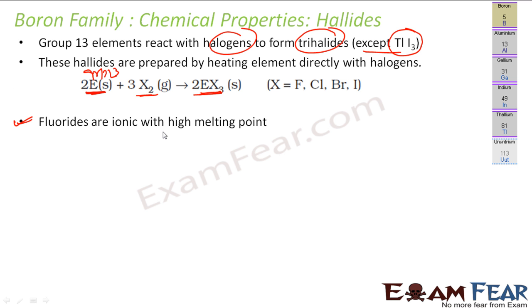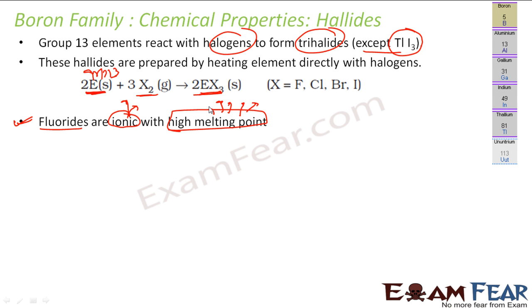The fluoride halides are ionic in nature because of the high electronegativity. To determine whether a compound is ionic or covalent, we look at the electronegativity difference. If the electronegativity difference is high, it is ionic; if it is low, it is covalent. Ionic compounds have high melting and boiling point because the force of attraction is more. You can watch the previous videos where we explained why ionic compounds have high melting and boiling points.